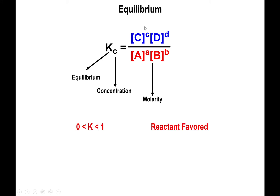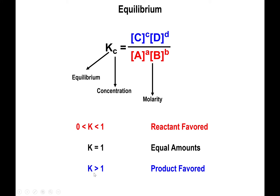If the value of the equilibrium constant is less than one, you have more stuff in the denominator than the numerator — that means the reaction is reactant-favored. If K equals one, you have roughly equal amounts of reactants and products. If K is greater than one, you have more products than reactants.